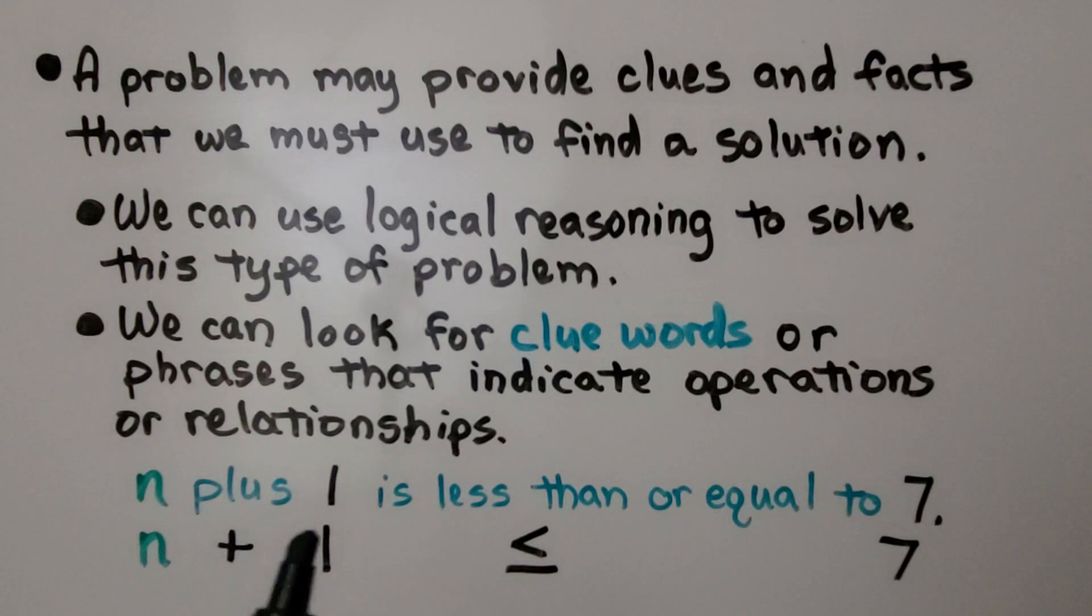We have n plus 1 is less than or equal to 7. That means we have a variable n plus 1 and we use the less than or equal to symbol and 7.